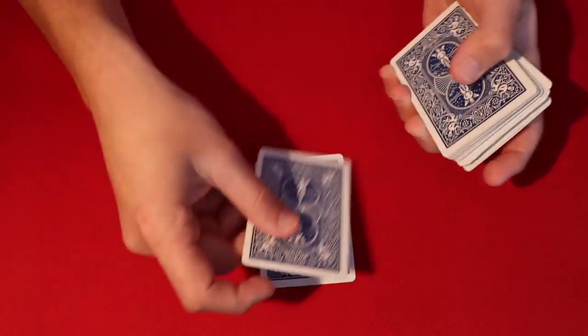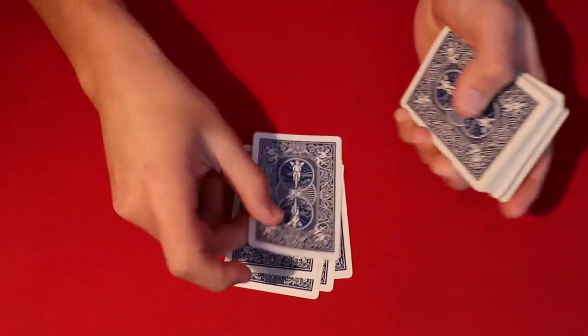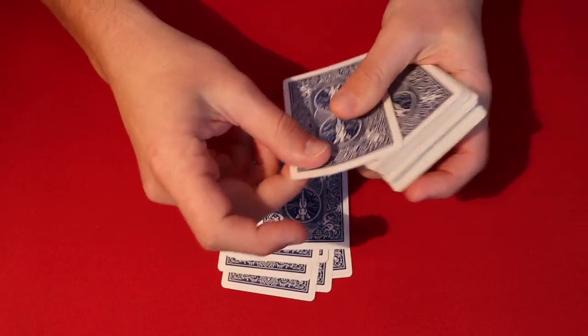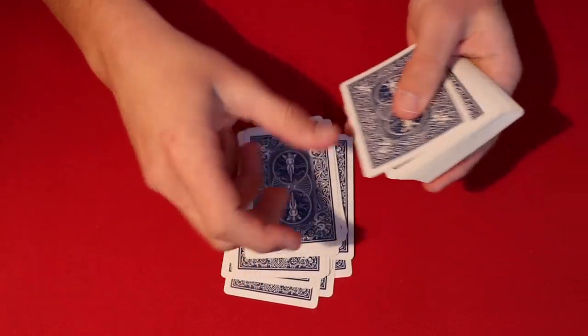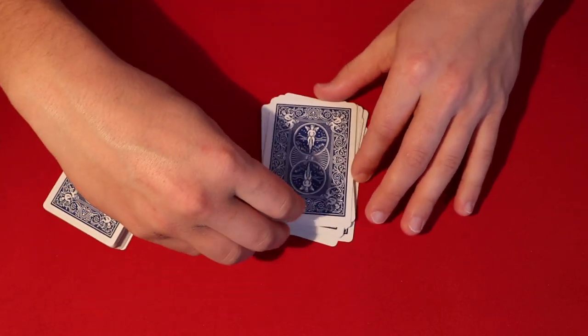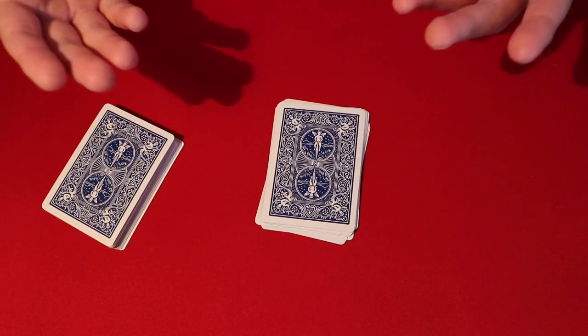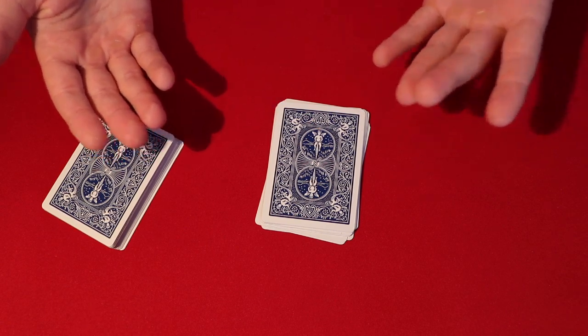But let's say they pick a number like 15, for example. All you do is you deal down 1, 2, 3, 4, 5, 6, 7, 8, 9, 10, 11, 12, 13, 14, 15. So we got 15 cards dealt down from the top. But obviously the spectator's card is not 15 cards down, it's only 10.